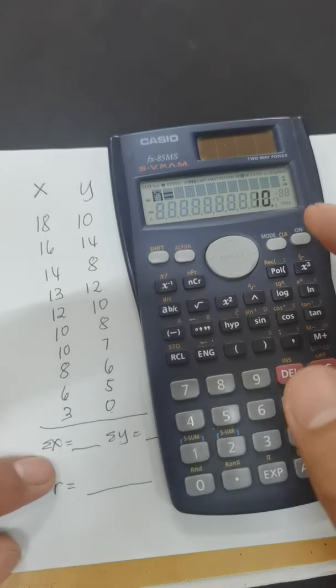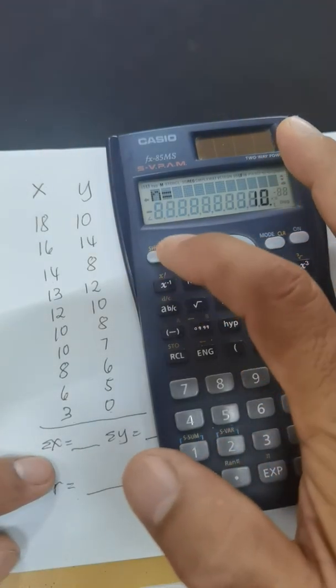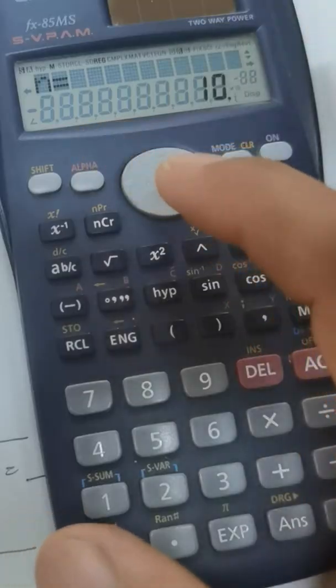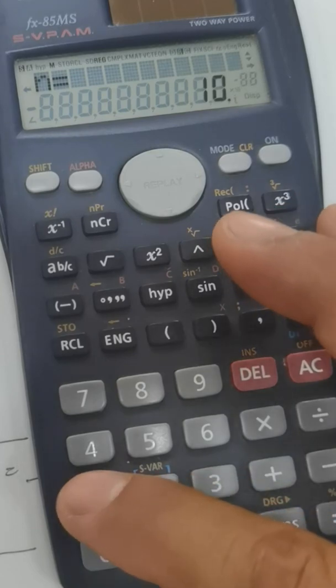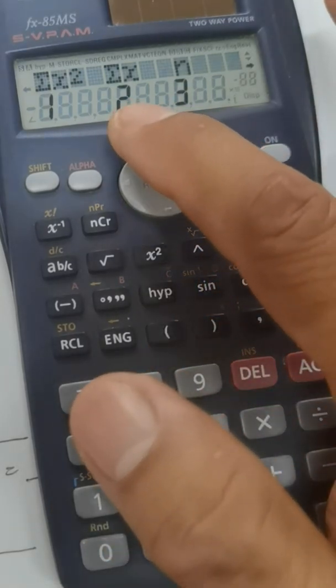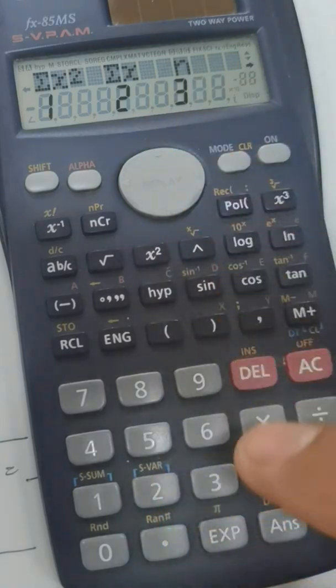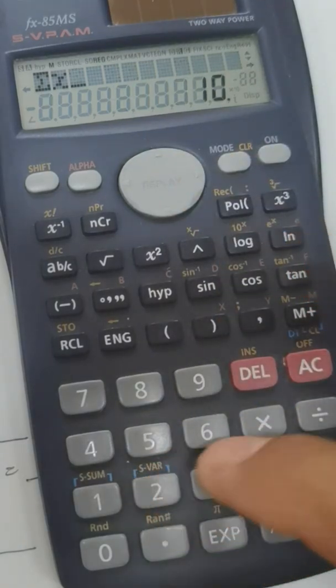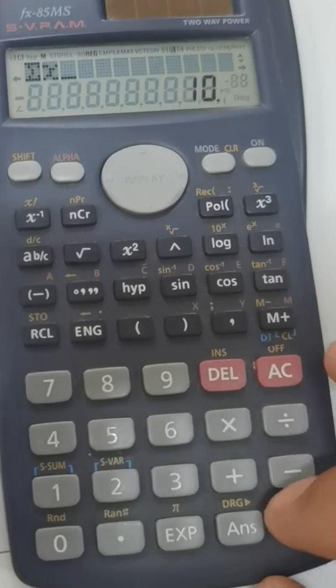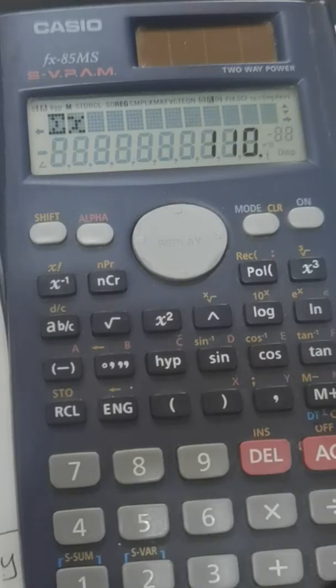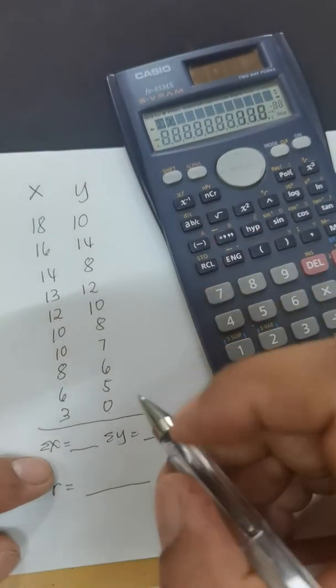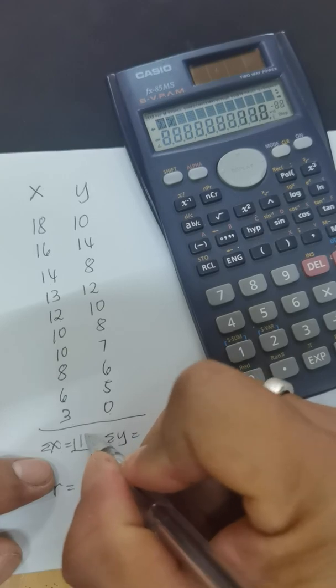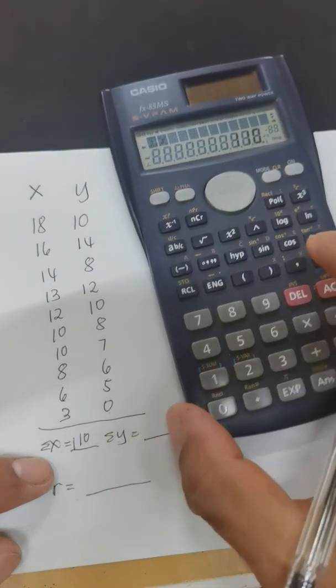Now our objective here is to find sum of X, so we are going to press shift 1. We have here sum of X, we are going to press number 2 and we will press equals. So that's 110. We're going to write here 110.